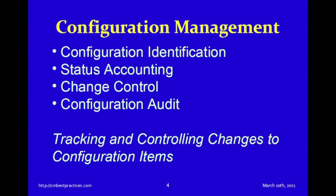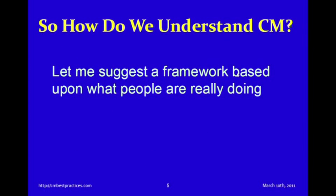Let's start by covering exactly what CM is all about. These are the four classic functions you'll find in any standard or framework: configuration identification, status accounting, change control, and configuration audit. Essentially, CM is all about tracking and controlling changes to configuration items. But I don't find this terminology to be very helpful. Let me suggest a different way to look at it that I think will be more intuitive — a framework from my book that helps people understand what CM is really all about.